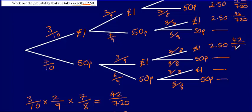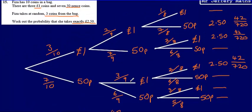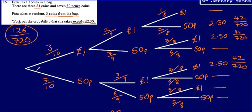So we've worked out the probability of getting £2.50 in each of those three ways — by choosing two £1 coins then a 50p, or a £1 then a 50p then a £1, or a 50p then two £1 coins. All that's left is to add these probabilities together: 42 + 42 + 42 = 126 over 720. So the final answer for this question is 126 over 720.